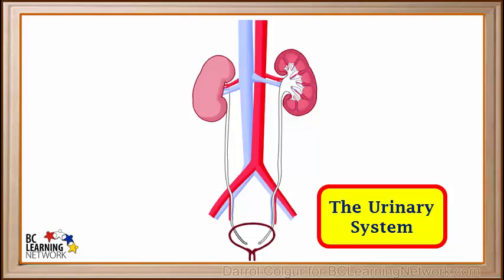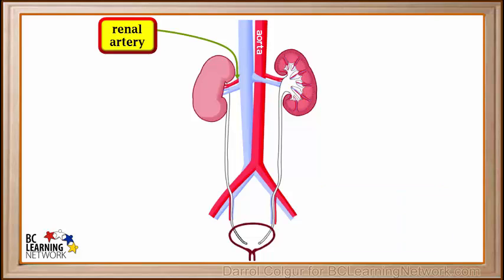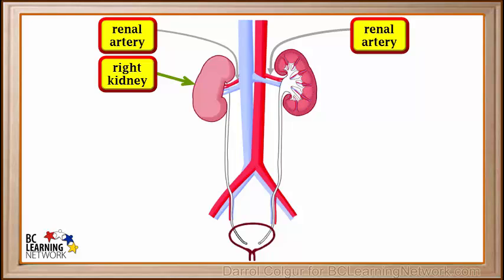Most of the excretion in our body takes place through the urinary system. The word renal means having to do with the kidneys. The renal artery branches off the large artery called the aorta and brings blood from the heart into the kidneys. Here we can see the right renal artery bringing blood to the right kidney, and the left renal artery bringing blood to the left kidney. Notice that kidneys are shaped a bit like a bean, and this diagram has removed the outer surface so we can see inside.